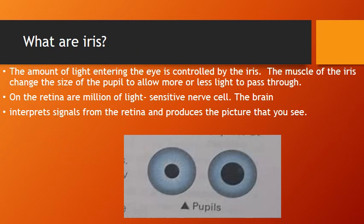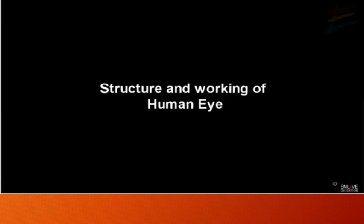What is the iris? The amount of light entering the eye is controlled by the iris. The iris is the colored part of our eyes. The muscles of the iris change the size of the pupil to allow more or less light to pass through. On the retina are millions of light-sensitive nerve cells. Nerves carry messages from one part of the body to another. The brain interprets signals from the retina and produces the picture that you see.